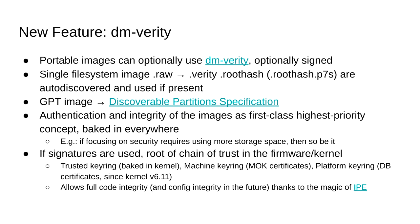These are especially important because if signatures are used, your chain of trust is rooted into the firmware. You can use a key that is in the trusted keyring — which is the one you bake into the kernel image — or the machine keyring, which is the one you have if you use MOK and shim. Since kernel 6.11, you can also use the platform keyring, which is the UEFI DB. So if you self-enroll on Secure Boot, you can use the same key to sign your DM Verity images. This allows full code integrity on your system, thanks to a new LSM going upstream in 6.12: IPE (Integrity Policy Enforcement). I'll show a demo at the end showing all this stuff together.